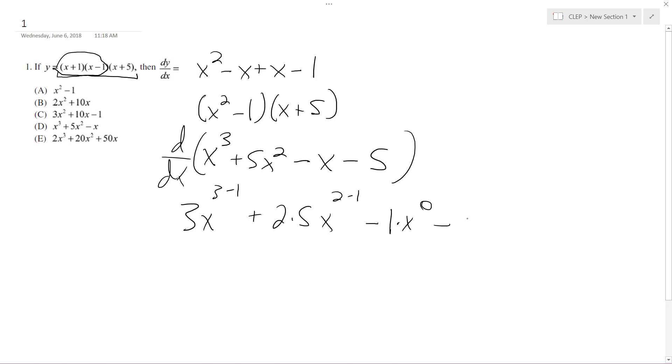And then minus 5. Five just becomes a constant, so all this simplifies down. This becomes 3x² plus 10x, and then this just becomes 1 because x raised to the zero is 1, minus 1. And the solution to this is C. Okay, I hope this helped you out. Thanks for watching, have a great day.